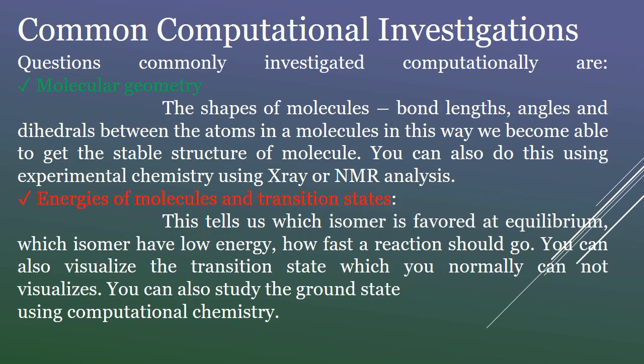Common computational investigations include molecular geometry - the shapes of molecules, bond lengths, angles, and dihedrals between atoms. In this way, we become able to get the stable structure of a molecule. You can also do this using experimental chemistry with X-ray or NMR analysis.